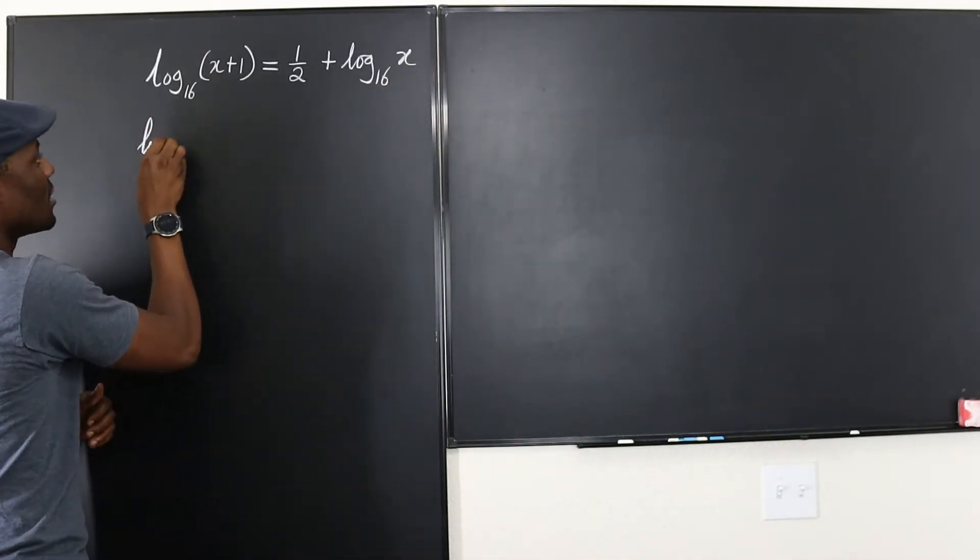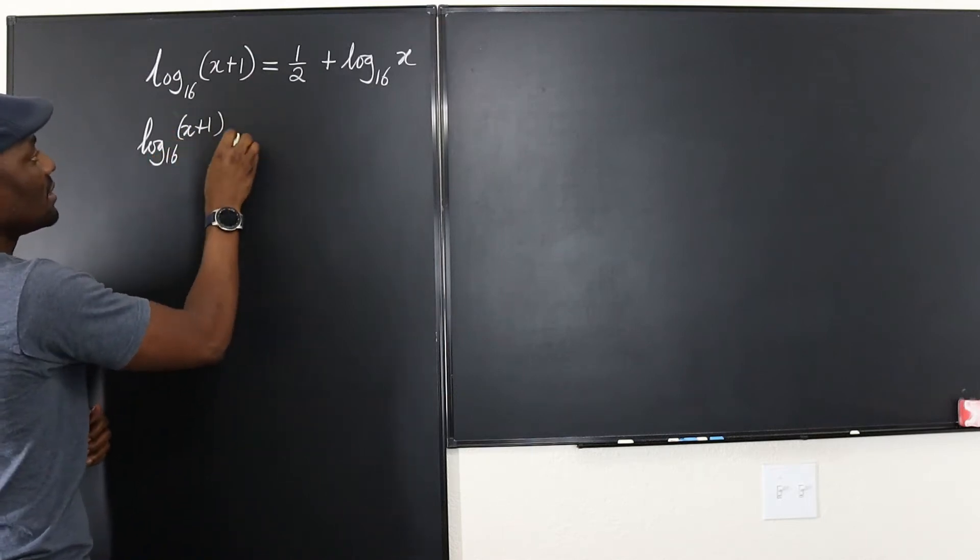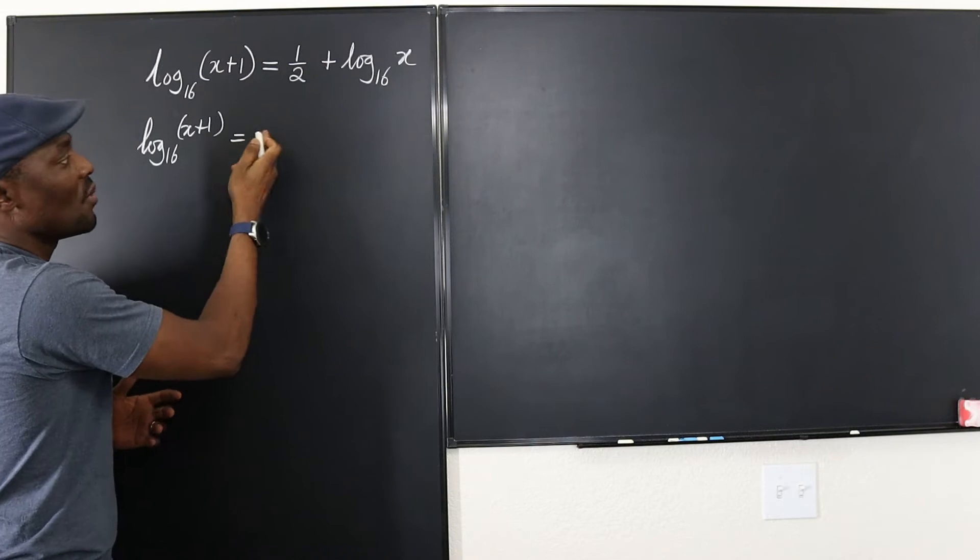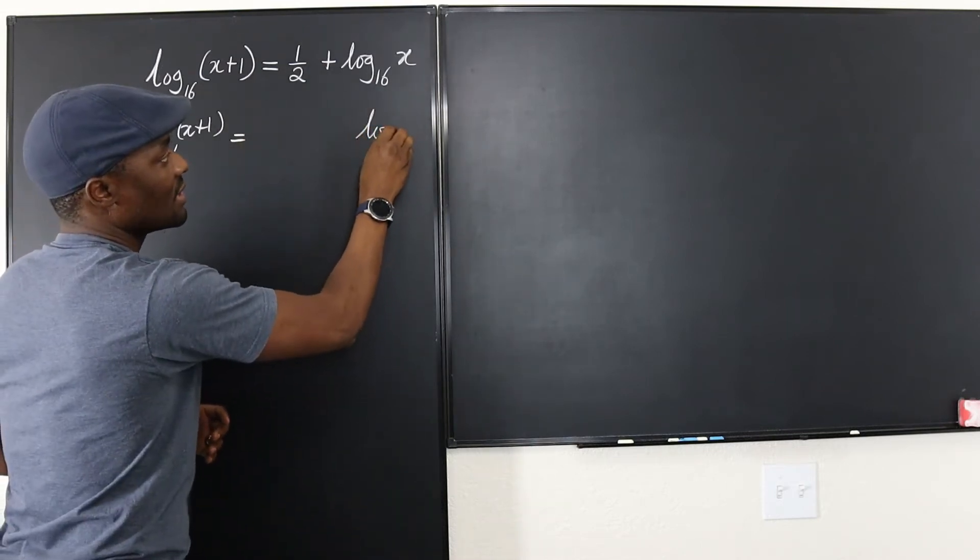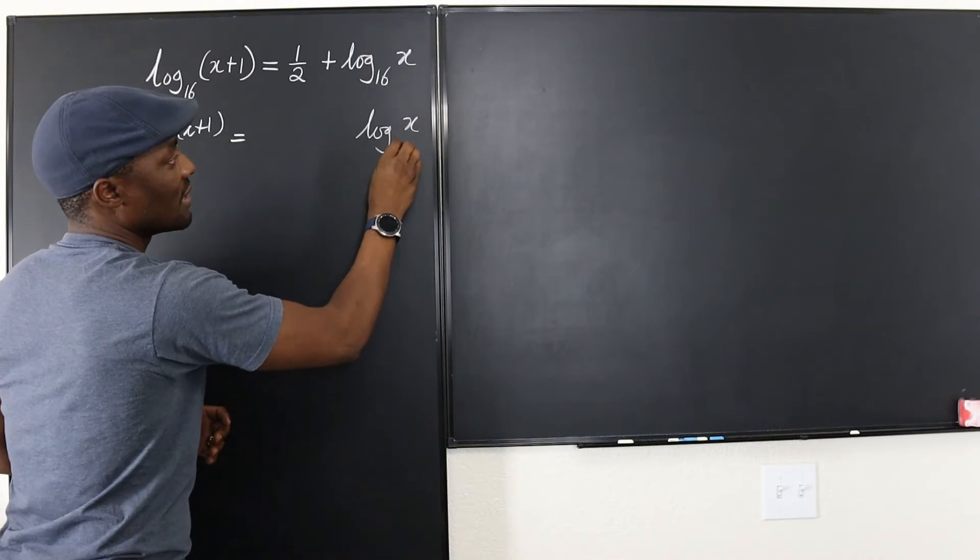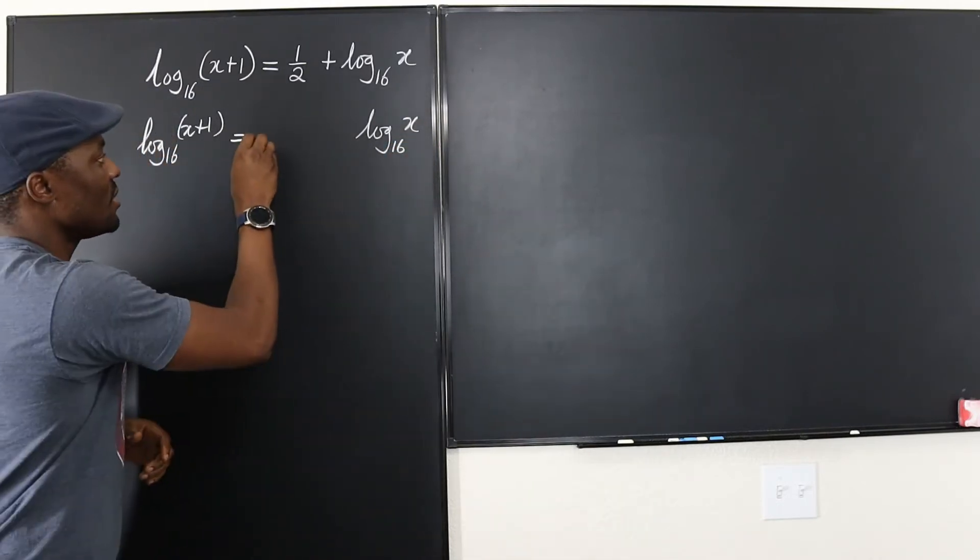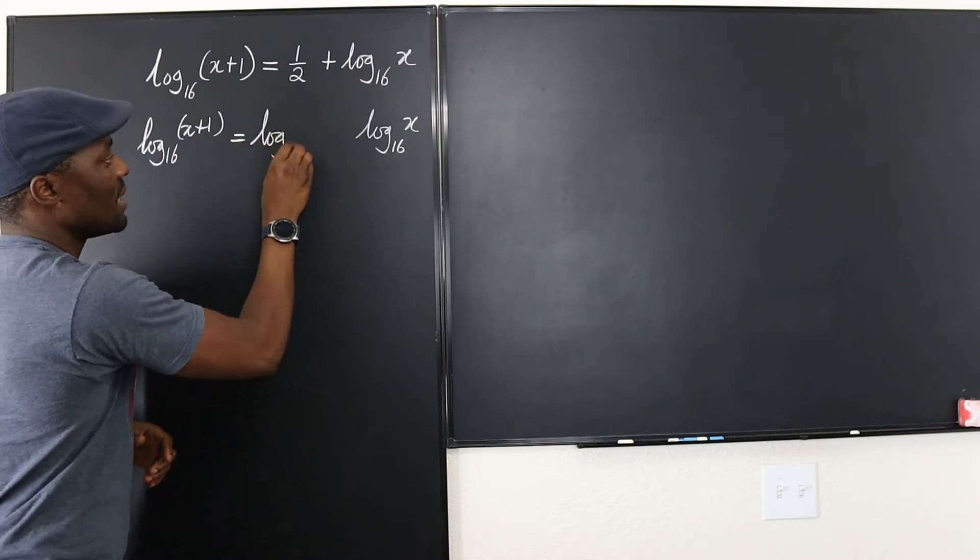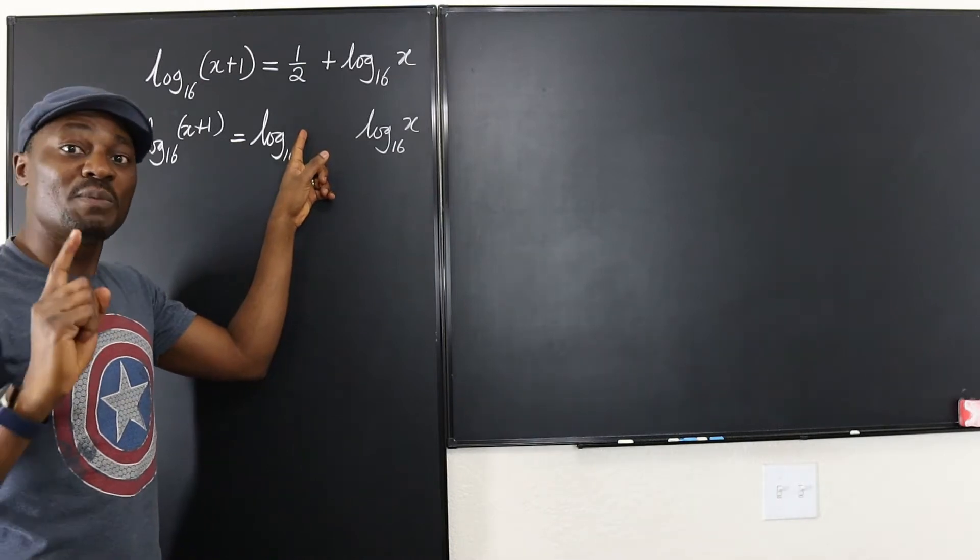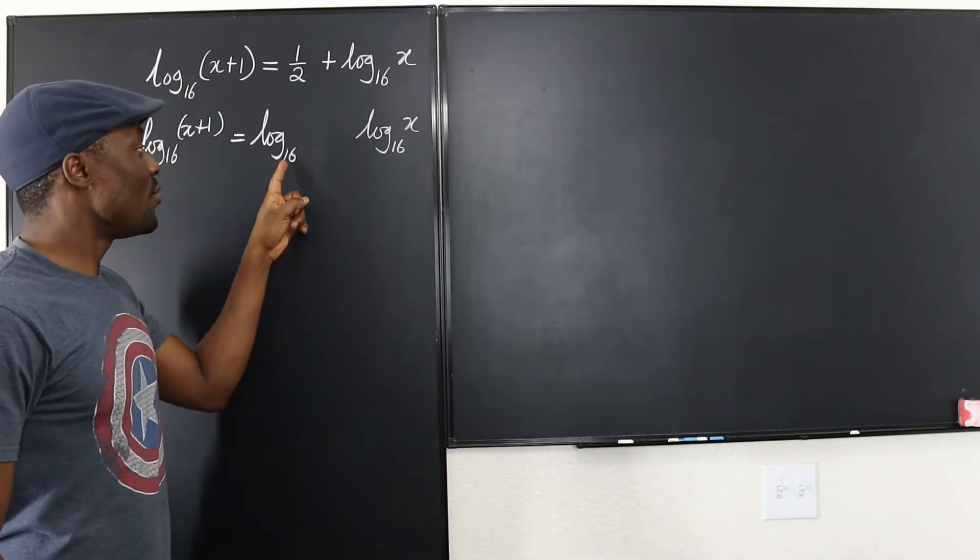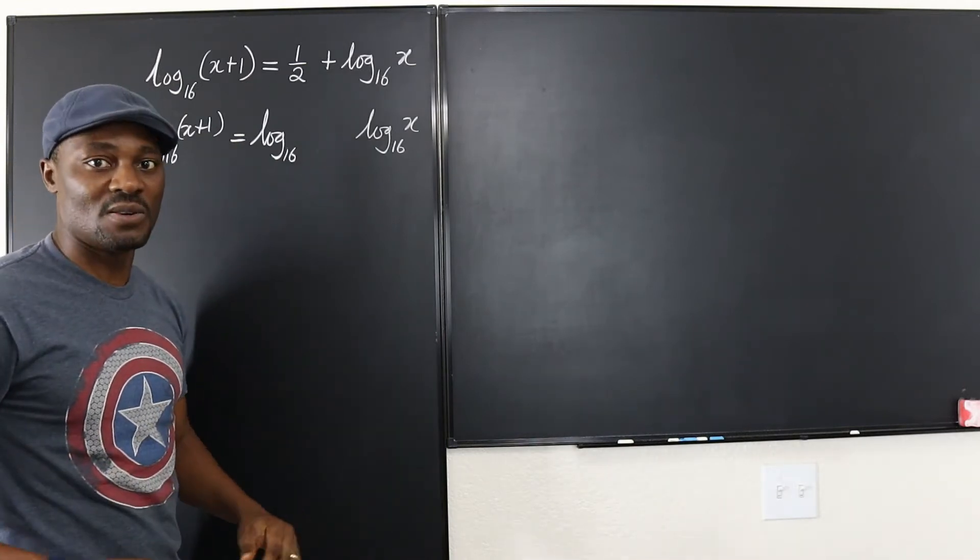I'm going to say this is log of x plus 1 to base 16 equals, well I don't know what's going to be here but I'm going to figure that out. And then this is going to be logarithm of x to base 16. Well how do I know what's going to be here? It's going to be the logarithm to base 16 of a number. What will that number be? Well, it has to be the answer you get when you raise 16 to the power of one half. That's the meaning of logarithm.